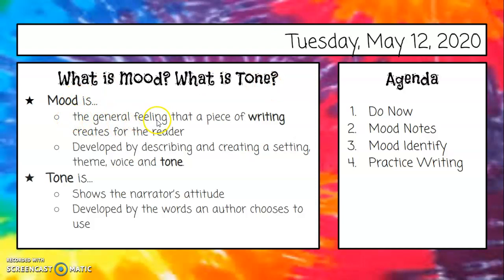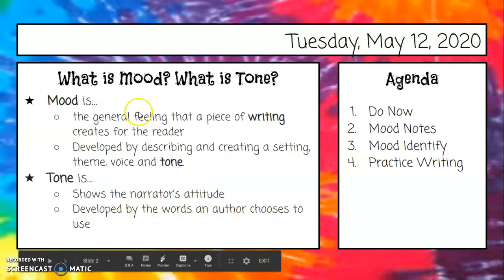What is mood? What is tone? Mood is the general feeling that a piece of writing creates for the reader. It's developed by describing and creating a setting, theme, voice, and tone. Like the mood when we read A Long Walk to Water, and Naya has to try and get water for her family - a lot of the time she's tired or nervous or exhausted, and we feel that mood of exhaustion in the way they describe Naya. The tone shows the narrator's attitude, developed by the words the author chooses to use. So they're very similar.